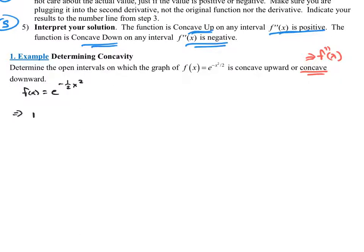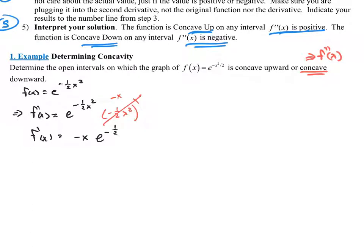So what does that tell me? That tells me that f prime of x — it's an exponential function, so you simply copy and paste e to the negative one half x squared. But then you need to remember to multiply it times the derivative of the exponent — the derivative of negative one half x squared — which would be negative one half times 2x, simplifying to negative x. So my first derivative would be negative x times e to the negative one half x squared.